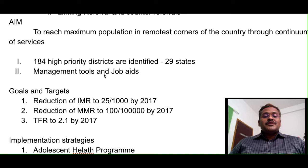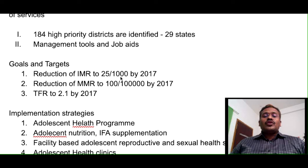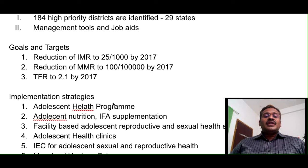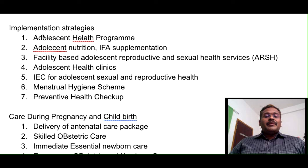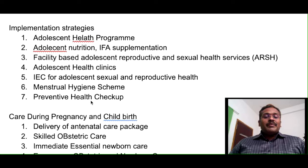The goals and targets under phase 3: reduction of IMR to 25 per thousand by 2017, reduction of MMR to 100 per 1 lakh by 2017, and reduction of TFR (total fertility rate) to 2.1 by 2017. Implementation strategies include: adolescent health program, adolescent nutrition and IFA supplementation, facility-based adolescent reproductive and sexual health services, adolescent health clinics, information education services for adolescent sexual and reproductive health, menstrual hygiene scheme, and preventive health check-up.